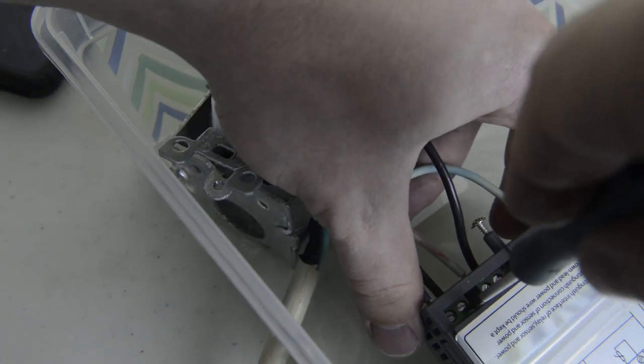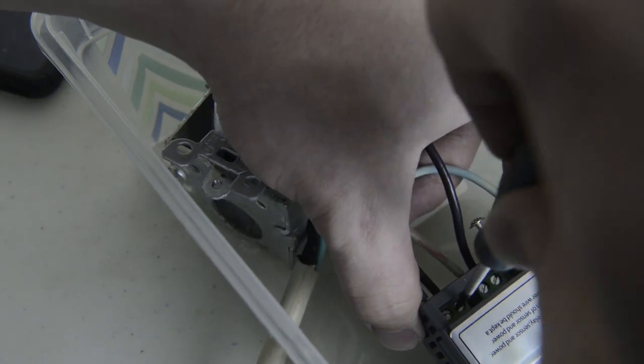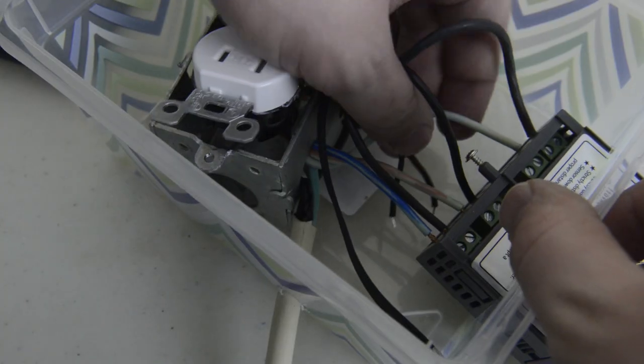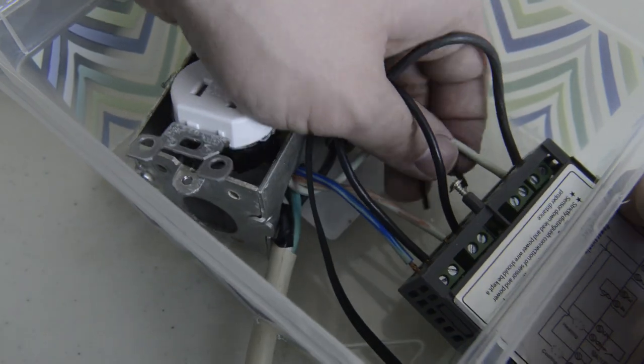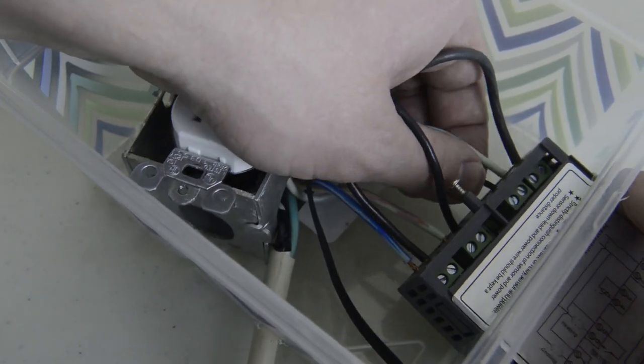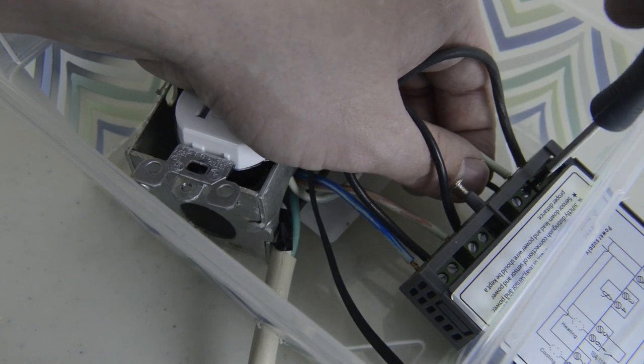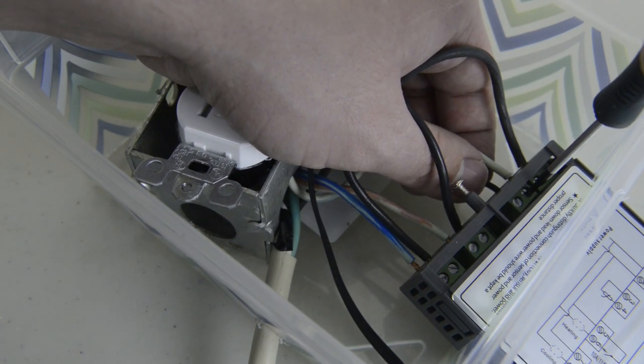There is a schematic on the back of the STC-1000 so you'll know where everything goes. On the far side it's the cooling, in the middle is the heating and then the sensor and the power. I'll show you where everything goes in just a second.